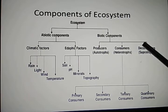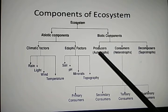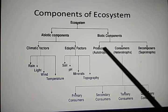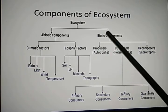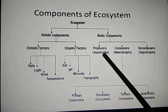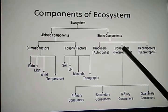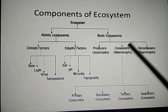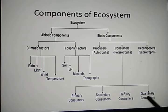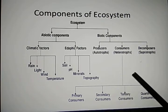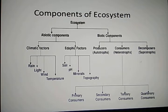Producers are only a single category because they have the capacity to produce their own substance. Whereas consumers depend on producers, so they are of four categories: primary consumer, secondary consumer, tertiary consumer, and quaternary consumer.